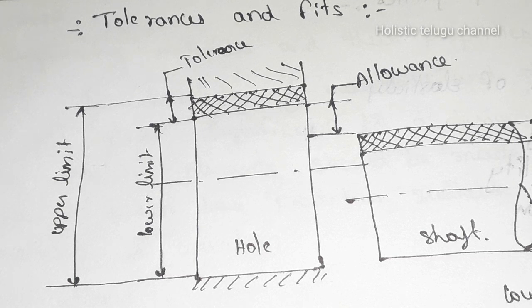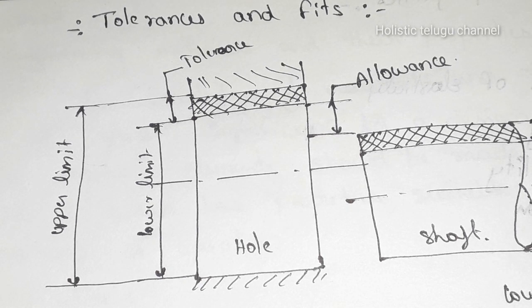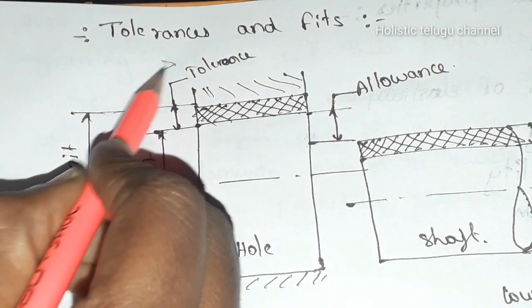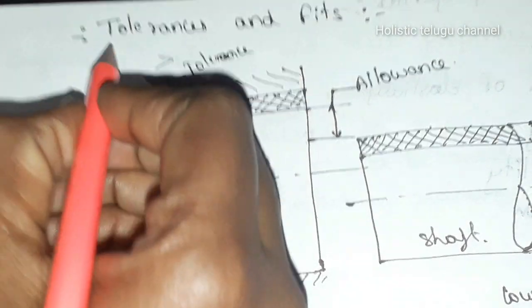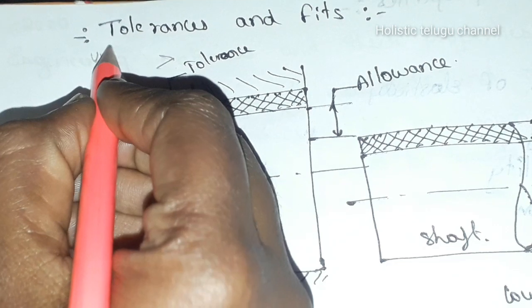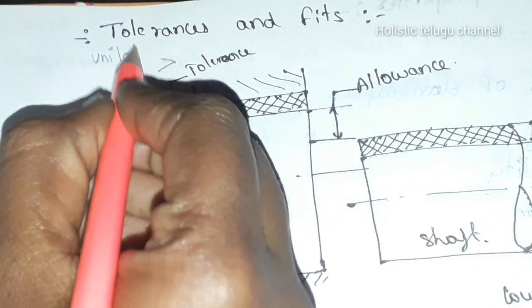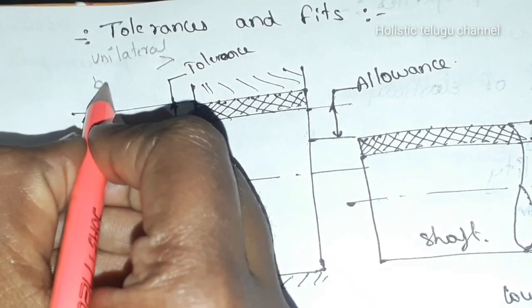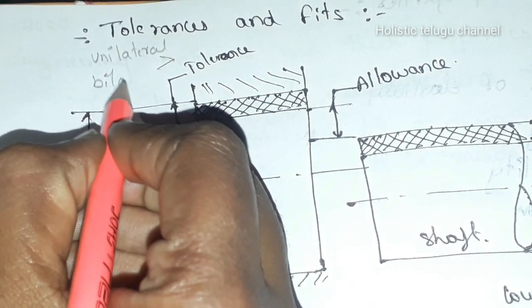In tolerances, we will talk about unilateral and bilateral. There are two types of tolerances: unilateral and bilateral.